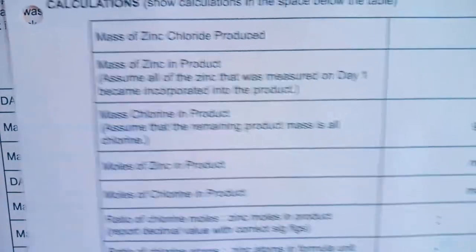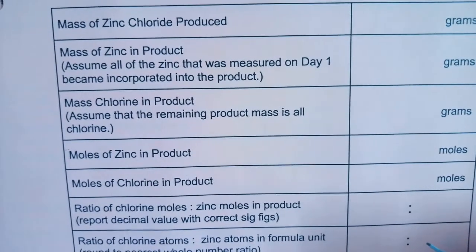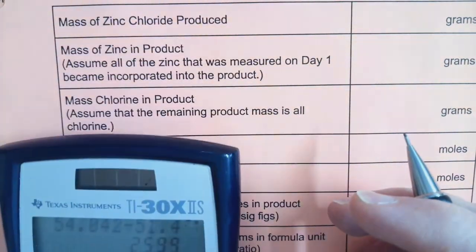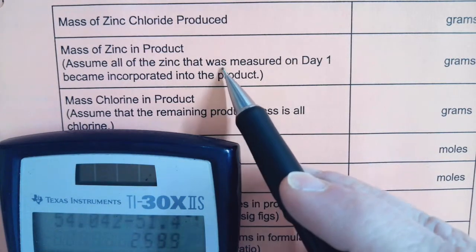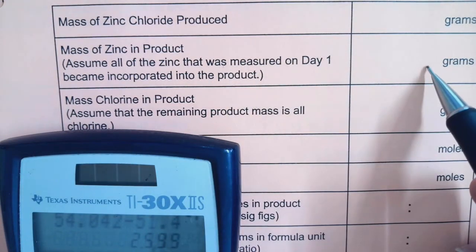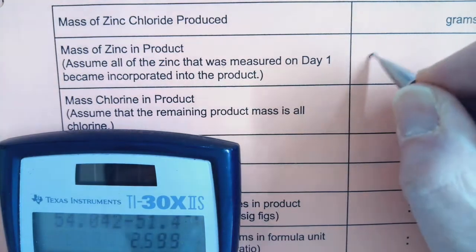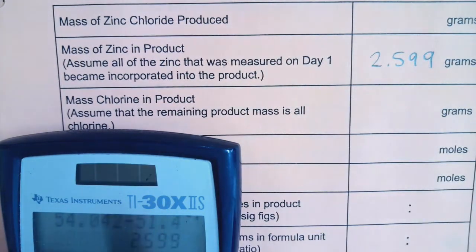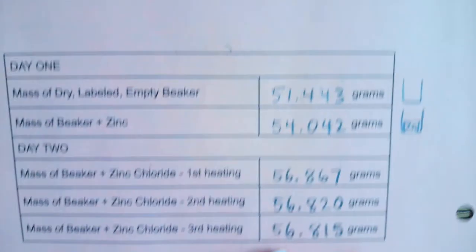Now if I carry that over to this sheet, again it was 2.599, that is how much zinc I assume gets incorporated into the product. So 2.599 grams.